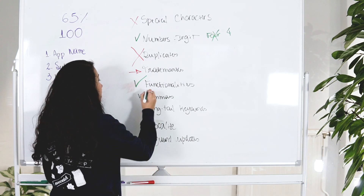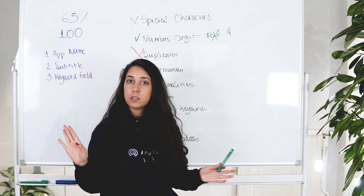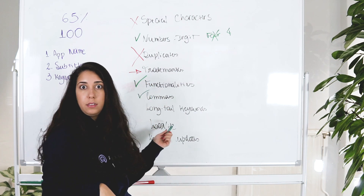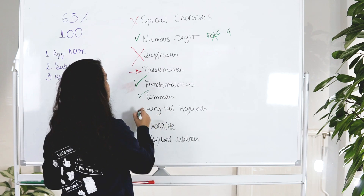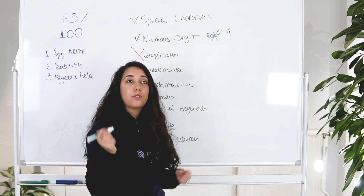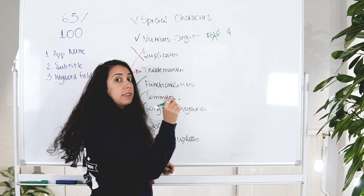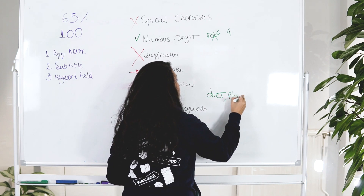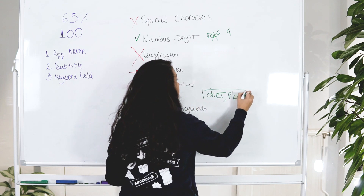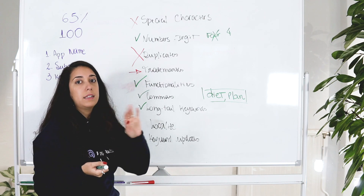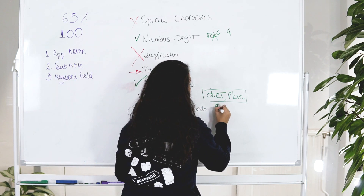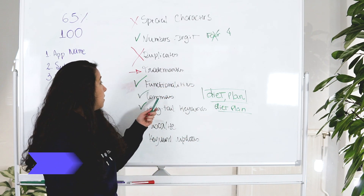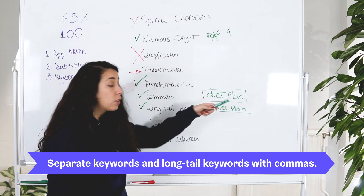Commas are important. When you write your keywords, separate them by commas — no spaces, just commas. Also, long-tail keywords — you should definitely use them, but separate them as well. For example, if you're using the long-tail keyword 'diet plan', write it in the keyword field as 'diet,plan'. The App Store will understand that you want to rank for 'diet plan' together. So really separate keywords by comma, including long-tail keywords.